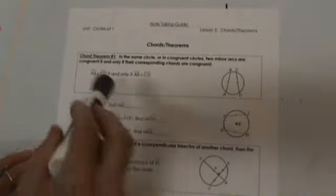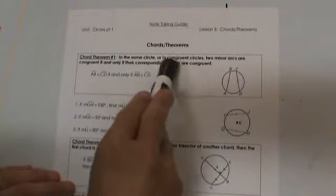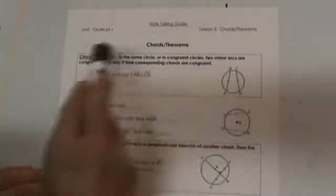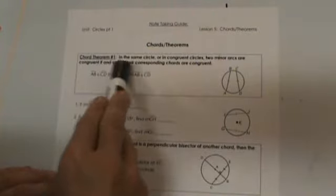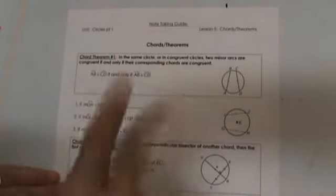The first theorem we're going to look at is this one. Theorem number 1 is on your note-taking guide. In the same circle or congruent circles, two minor arcs are congruent if and only if their corresponding chords are congruent. That means two things.